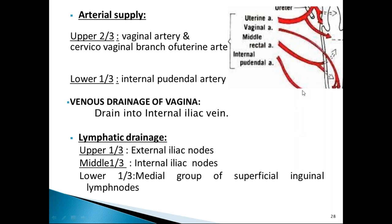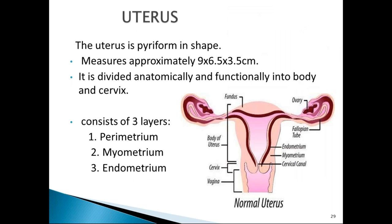The arterial supply of the vagina: the upper two-thirds are supplied by the vaginal artery and the cervicovaginal branch of the uterine artery. The lower one-third is supplied by the internal pudendal artery. Venous drainage corresponds to the arteries and drains into the internal iliac vein. Lymphatics: upper one-third to external iliac, middle one-third to internal iliac, and lower one-third to the medial group of superficial inguinal lymph nodes.